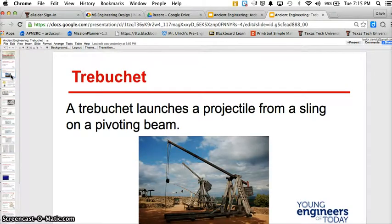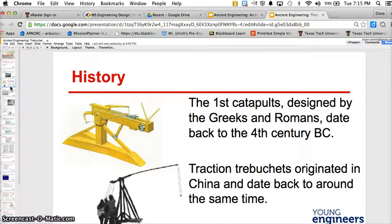A trebuchet launches a projectile from a sling on a pivoting beam. Basically, the catapult and trebuchet are being developed at the same time in two different continents here, as you can see.